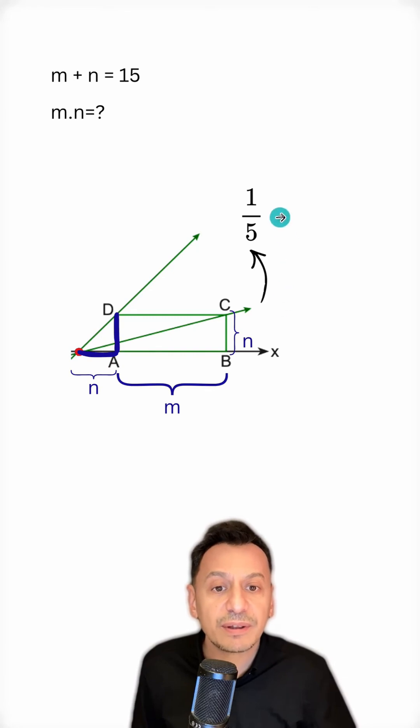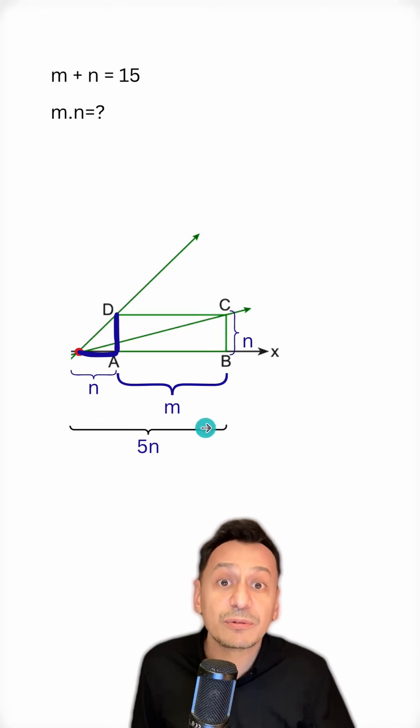The slope of the line here is given as 1 over 5. This means the following. The ratio of the vertical distance to the horizontal distance here will be 1 over 5. So, if I call this n, then the length here must be 5n. Since this is 5n and this is n, I find that m is 4n by subtracting n from 5n.